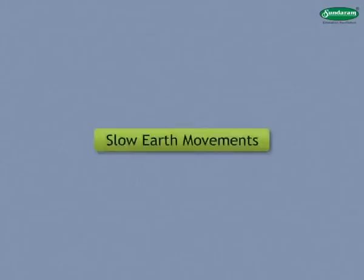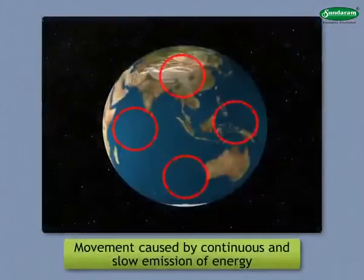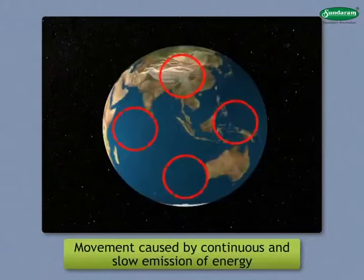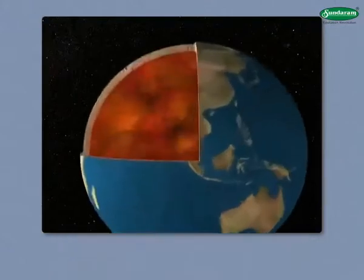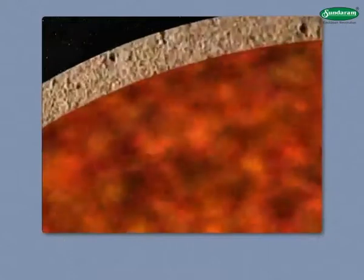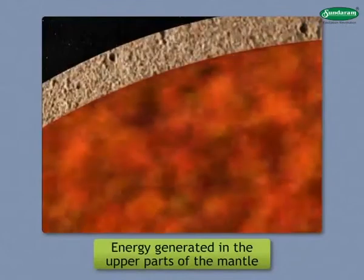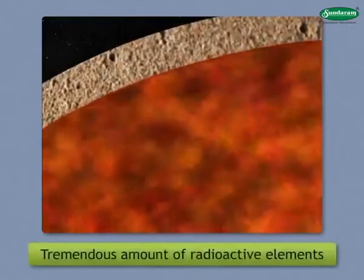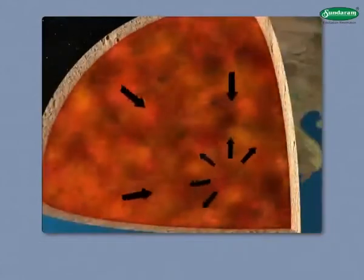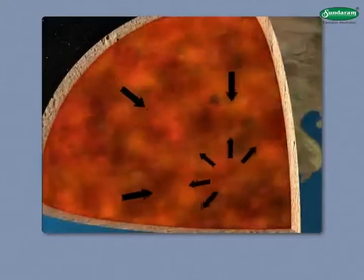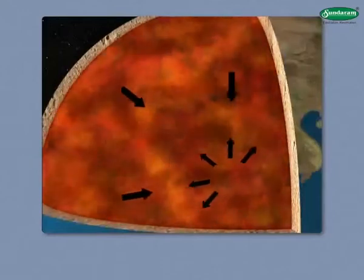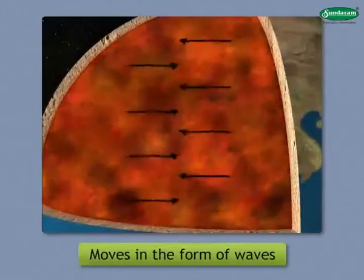Slow Earth Movements. The movements in the interior of the earth that are caused by the continuous and slow emission of energy are called slow earth movements. Slow earth movements are caused due to the energy generated in the upper parts of the mantle, as it consists of a tremendous amount of radioactive elements. Due to the flow of energy, movements are generated in the interior of the earth. This energy moves in the form of waves.